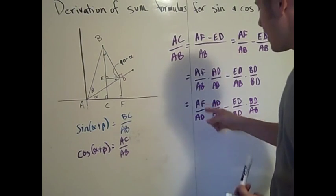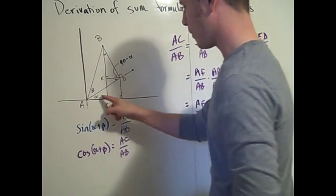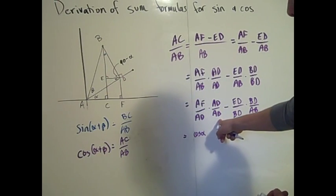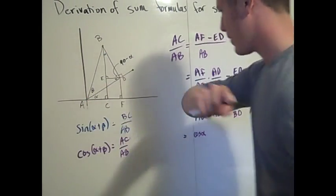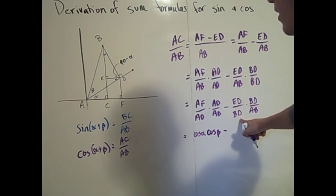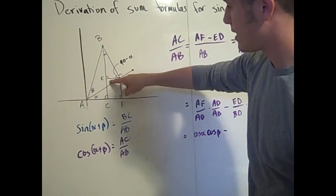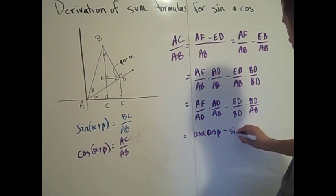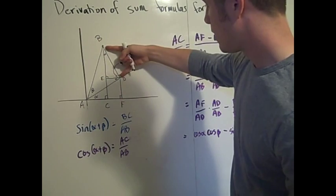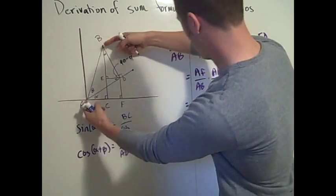Now we just have to investigate the diagram. AF over AD is the cosine of alpha, so this is cosine alpha. AD over AB is cosine beta. ED over BD is the sine of alpha — that length over that length — so this is sine alpha. And BD over AB is the sine of beta — opposite over hypotenuse — so sine of beta.